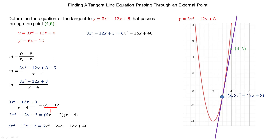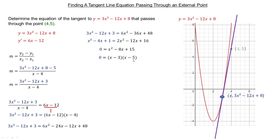Collecting like terms: negative 24x and negative 12x add to negative 36x. I notice every coefficient is divisible by 3, so dividing everything by 3 gives: 2x² − 12x + 16 on the right. Collecting all like terms — 2x² minus x² is x², negative 12x plus 4x is negative 8x, and 16 minus 1 is 15 — we get x² − 8x + 15 = 0. This factors nicely: we need two numbers that add to negative 8 and multiply to 15, which are negative 3 and negative 5.